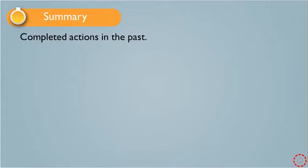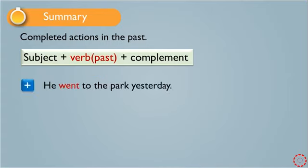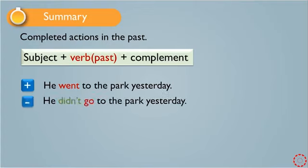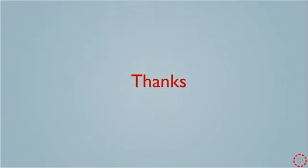Summary: we use the past simple tense for completed actions in the past. The positive form is subject + verb in past form + complement — for example, 'He went to the park yesterday.' To negate, add didn't and use the base form: 'He didn't go to the park yesterday.' The question form is: 'Did he go to the park yesterday?' And the WH-question form: 'When did he go to the park?' Thanks for watching and listening.